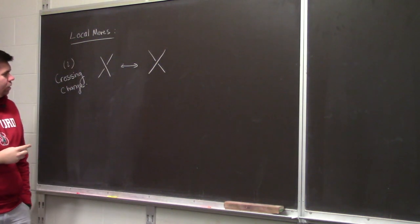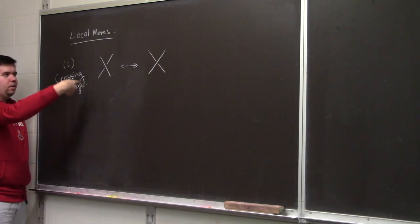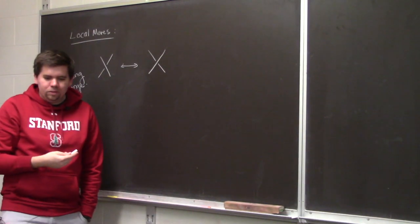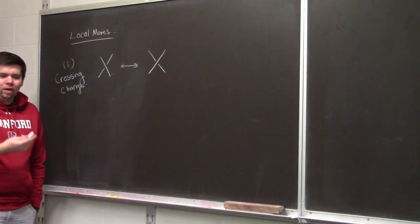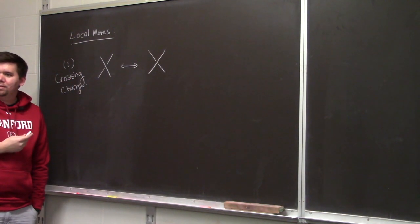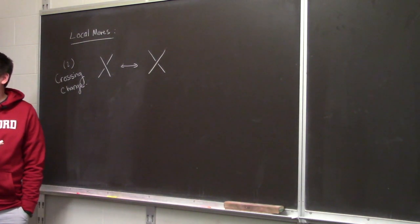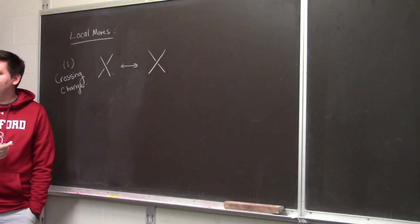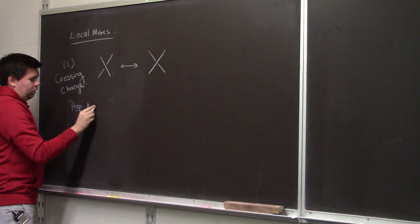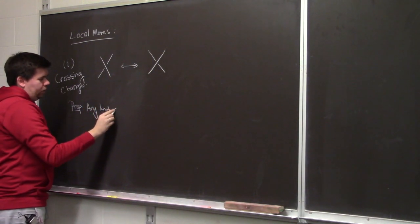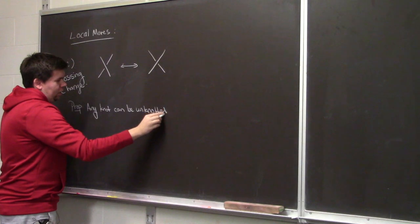We say that two knots are related by a series of crossing changes if you can move from one knot to the other via just crossing changes. Thinking about crossing changes, a good question is: if you start out with some knot, what can you do to it if you allow crossing changes? Here's a proposition: any knot can be unknotted via just crossing changes.